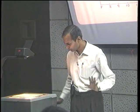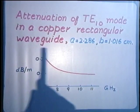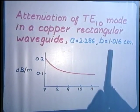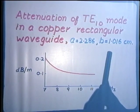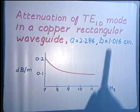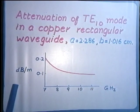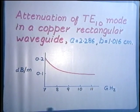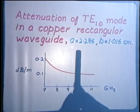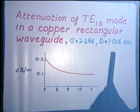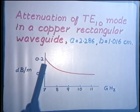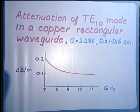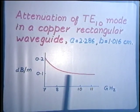The X-band waveguide is a copper waveguide with dimensions 2.286 cm and 1.016 cm (corresponding to 0.9 inches and 0.4 inches). For the dominant TE 1,0 mode, the attenuation in decibels per meter varies as a function of frequency. The cutoff frequency for the TE 1,0 mode was calculated earlier as around 6.55 GHz. As we approach that frequency, the attenuation rises steeply, but somewhat far away from it, the attenuation is not varying so sharply.